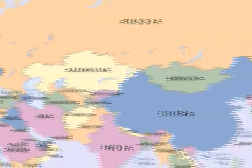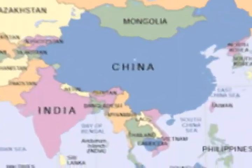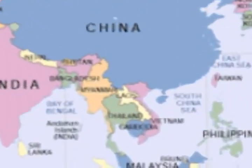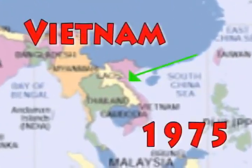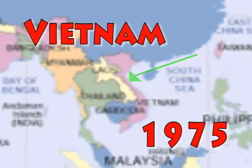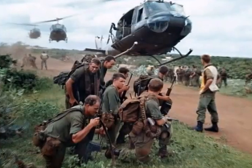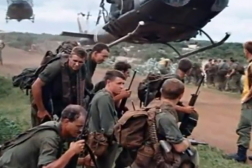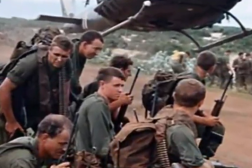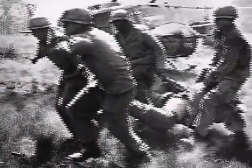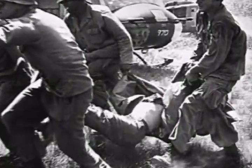Next we travel to Vietnam. It was the year 1975, and after a lengthy period of time — 19 years and 180 days to be exact — the Vietnam War came to a close with the communist north, led by Ho Chi Minh, coming out victorious.